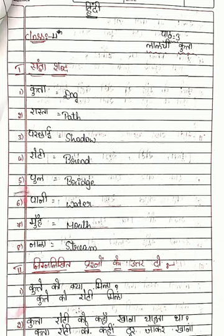Kutta — Dog. D-O-G. Dog. Raasta — Path. P-A-D-H. Parchai — Shadow. S-H-A-D-O-W. Shadow.